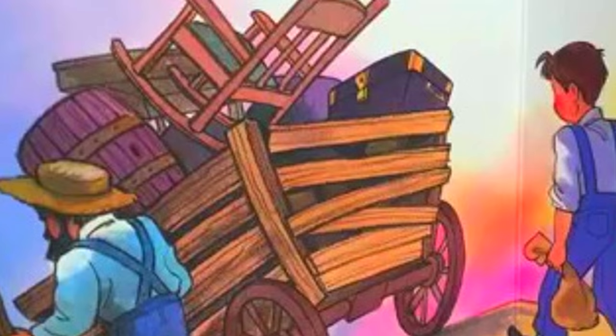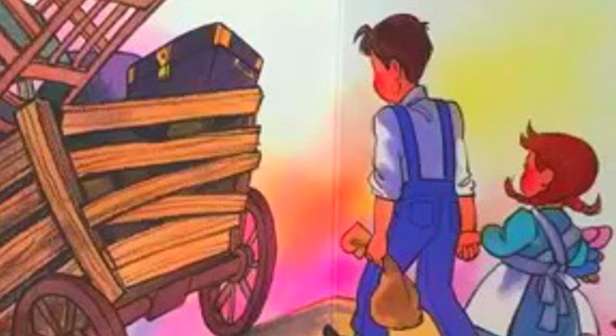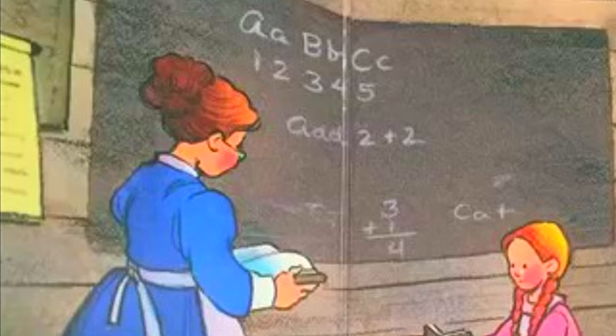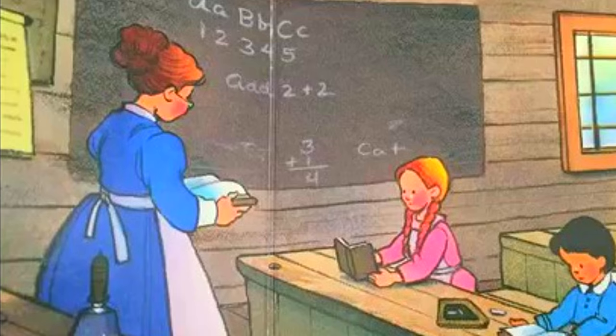Abe's dad moved the family to Indiana, but when Abe was 10 years old, his mother died. Abe didn't go to school much, but he learned to read and write.